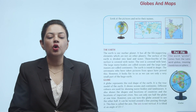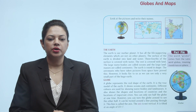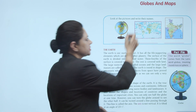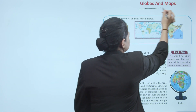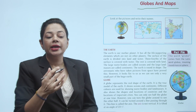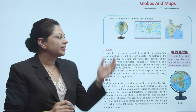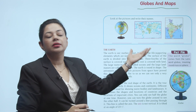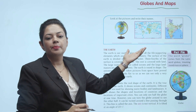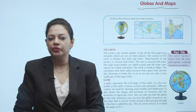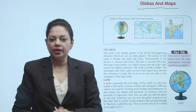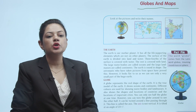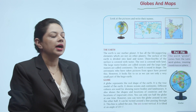Hello students, hope you all are doing good. Today we are doing a chapter named Globes and Maps. Look at the pictures and write their names — this is a globe, these are a world map, and this is a map of India. Now the first topic is the Earth.